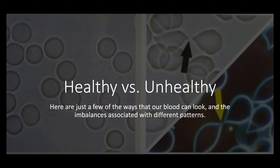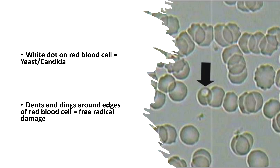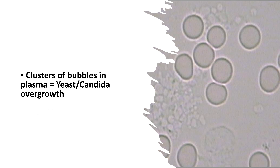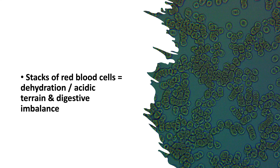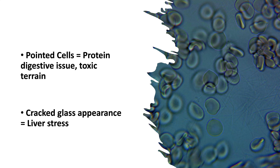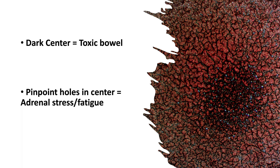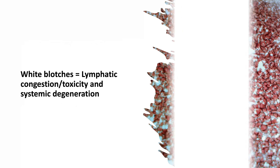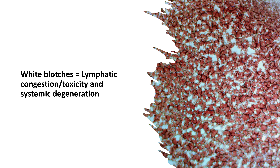Healthy vs. Unhealthy — here are just a few of the ways that our blood can look, and the imbalances associated with different patterns. A white dot on a red blood cell indicates yeast or candida. Dents and dings around the edges of a red blood cell indicate free radical damage. Clusters of bubbles in plasma indicate yeast or candida overgrowth. Stacks of red blood cells indicate dehydration, acidic terrain, or digestive imbalance. Pointed cells indicate a protein digestive issue and toxic terrain. A cracked glass appearance indicates liver stress. A dark center indicates toxic bowel. Pinpoint holes in the center indicate adrenal stress or fatigue. White blotches indicate lymphatic congestion, toxicity, or systemic degeneration.